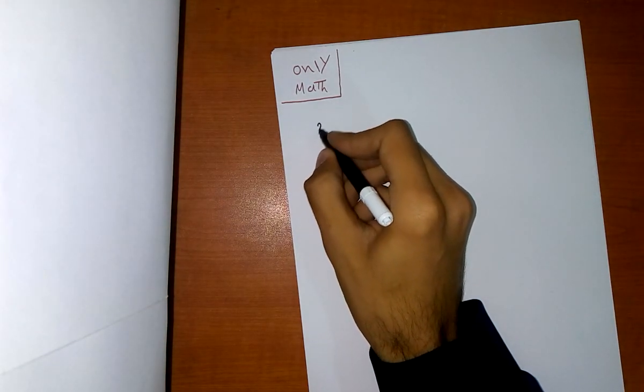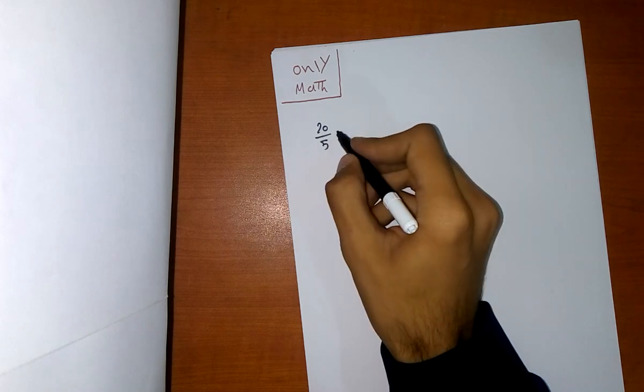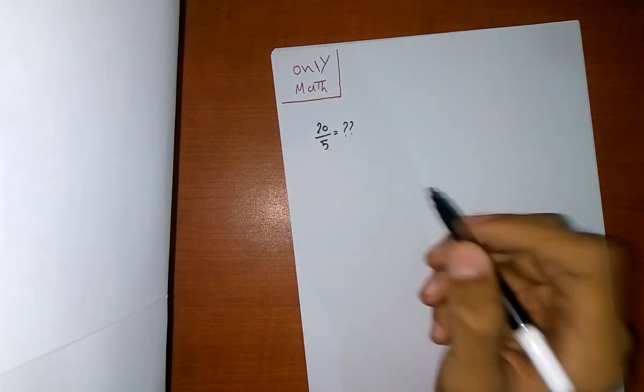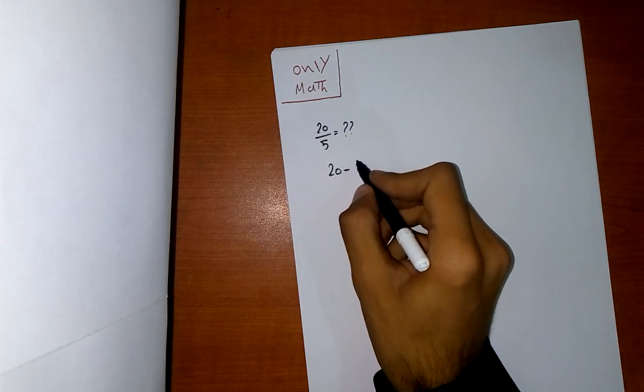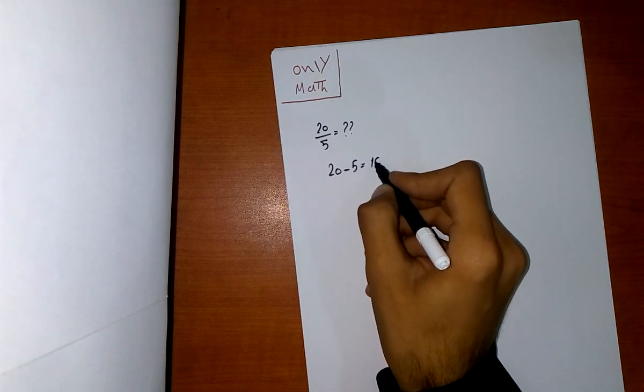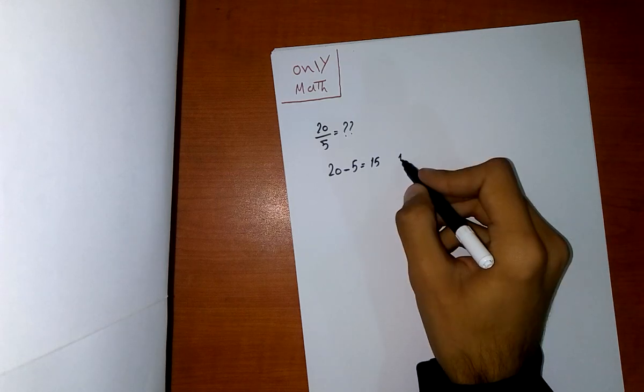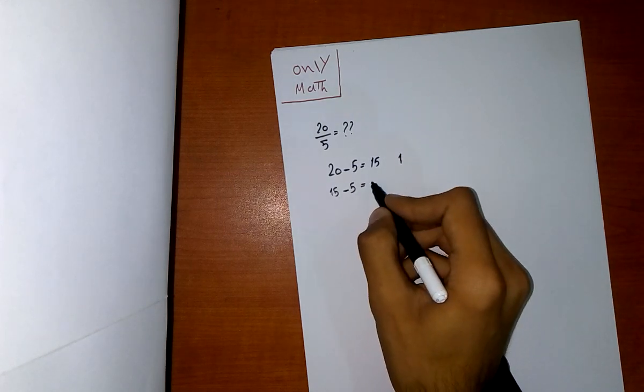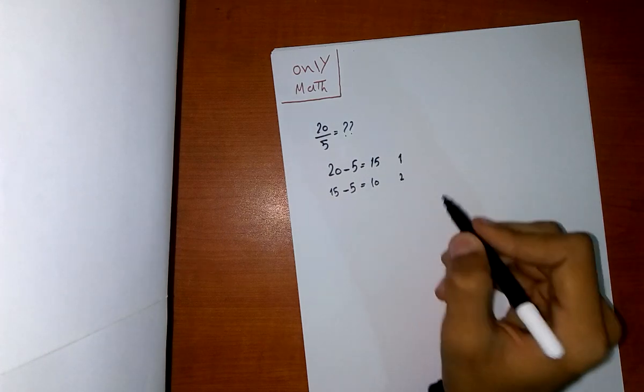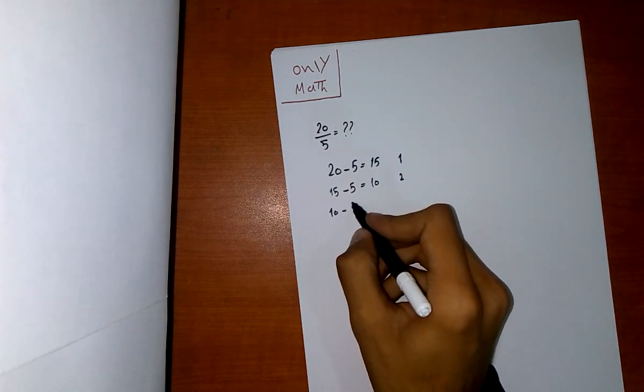20 divided by 5, what does it equal? You go: 20 minus 5 equals 15, and you will number this as 1. Then 15 minus 5 equals 10, number 2, and 10 minus 5